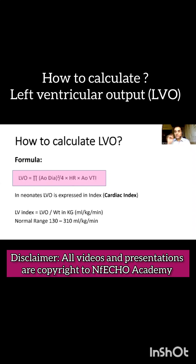Hello everyone. In this video we will learn how to calculate LVO, that is left ventricle output. The formula is pi r squared, where r is the radius of the aorta, multiplied by the basal heart rate and the aortic VTI. We can divide this LVO by the weight of the baby in kilograms, which gives us the left ventricle index or cardiac index.